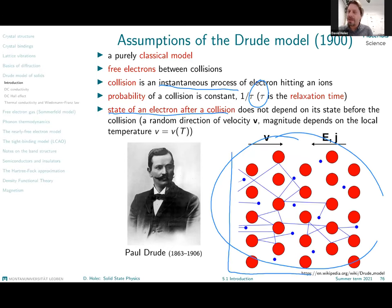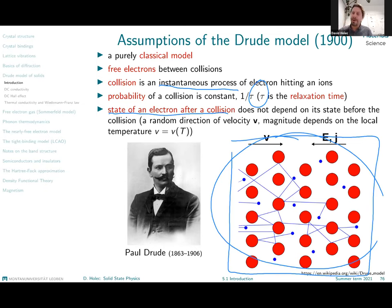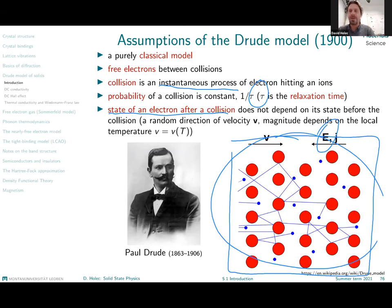The only role of the atoms is to provide scattering centers, treated in a fuzzy way — as an effective background charge or background potential that defines the probability of scattering. The discrete crystalline structure is already too detailed for the Drude model; electrons see only a homogeneously distributed background potential as the origin of scattering. The potential from ionic cores is not explicitly accounted for. The only external contribution to electron motion that is considered is the external electric field, and later the magnetic field.